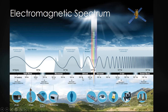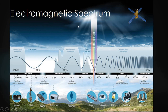Visible light sits between infrared and ultraviolet rays in the electromagnetic spectrum. This is the light from the sun that we are able to see with our eyes. This is what makes up the electromagnetic spectrum.